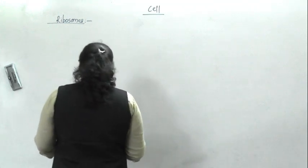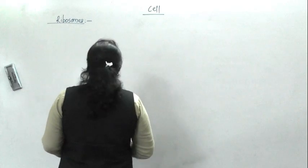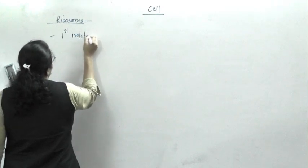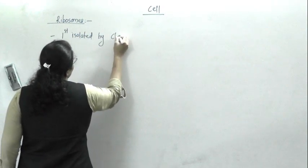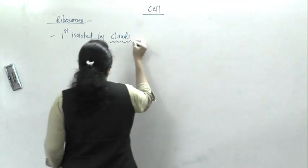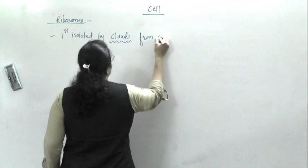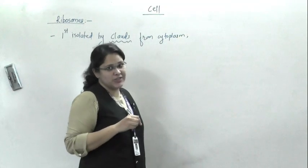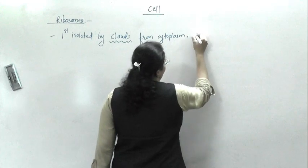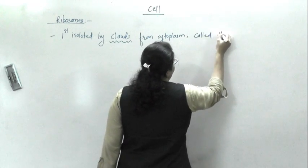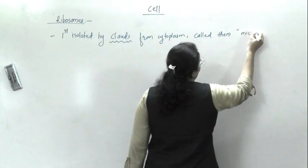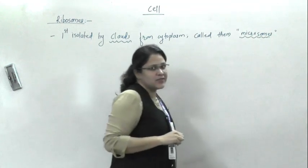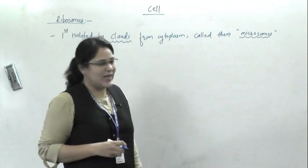These ribosomes were first isolated by Claude from the cytoplasm, and he called these tiny structures as microsomes. For MCQ, you have to remember this: Claude called these tiny particles as microsomes.